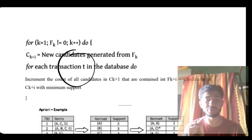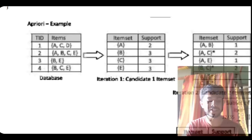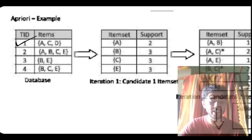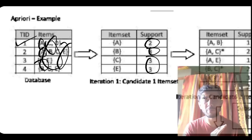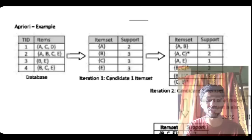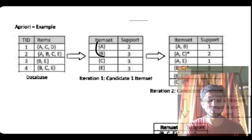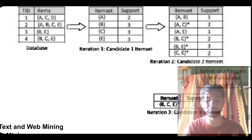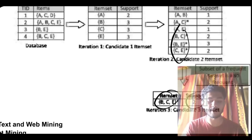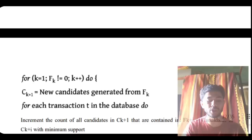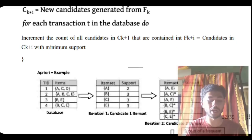For example, with four transactions — {a,c,d}, {a,b,c,e}, {b,c}, {b,c,e} — you count how many times each item a, b, c, e occurs. Items with a count less than the minimum support threshold (e.g., 2) are eliminated. You then consider pairs, then triplets, keeping only those with support count ≥ 2 until you reach the most frequent item set. This table may be given in the exam, so be prepared.